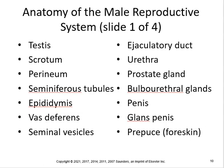The male reproductive system includes the testes, scrotum, perineum, seminiferous tubules, epididymis, vas deferens, seminal vesicles, ejaculatory duct, urethra, prostate gland, bulbourethral gland, the penis, the glans penis, and the prepuce, which is the foreskin.